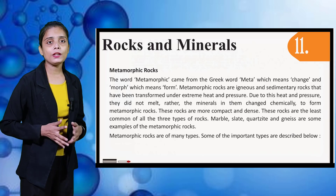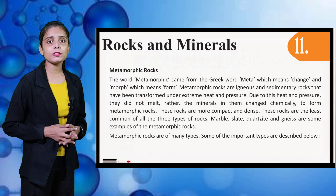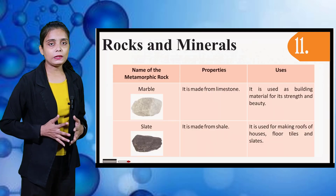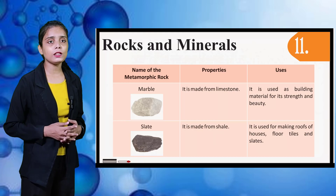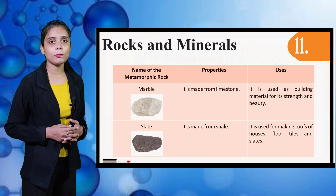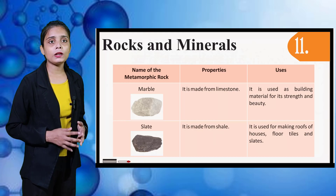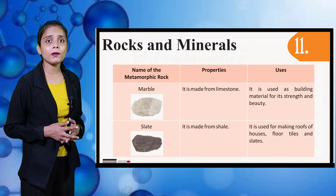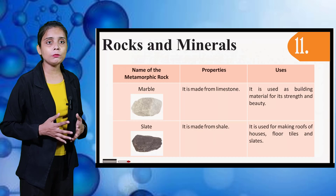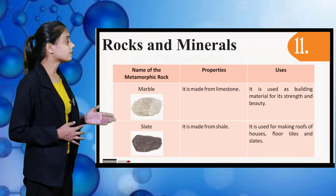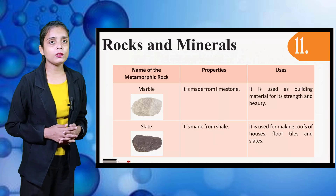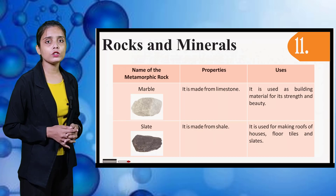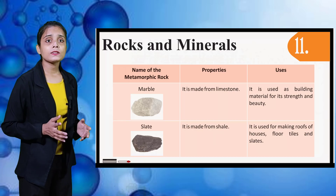Metamorphic rocks are of many types; some important types are described here. You can see a table with name, properties, and uses. The first metamorphic rock is Marble. It is made from limestone and is used as a building material for its strength and beauty. Next is Slate. It is made from shale and is used for making roofs of houses, floor tiles, and slates.